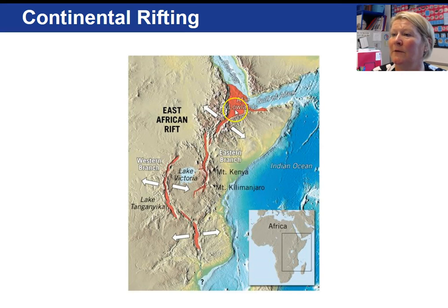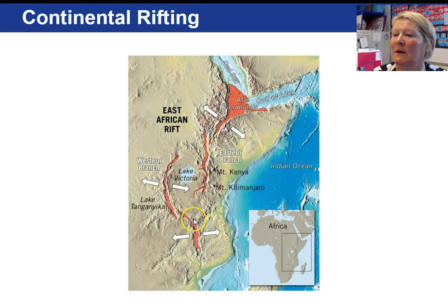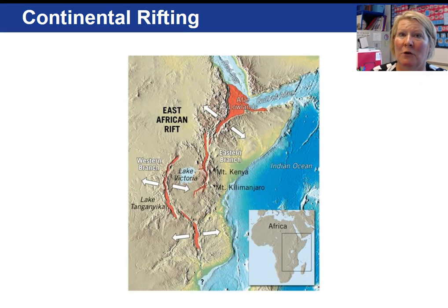Here's the East African Rift, with the rifts shown in red. The primary divergent direction is south-southeast to north-northwest. As a result of this continental rift, the Red Sea is forming and growing. In summary, not all divergent plate boundaries exist on the ocean floor — most, but not all. Sometimes continents are rifted apart as well.